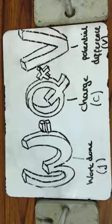This is the formula for work done. Work done equals charge times potential difference. And that's an example. Okay, well done.